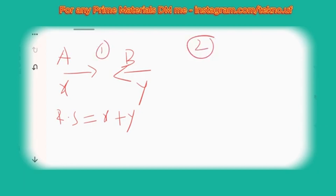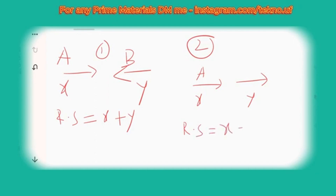Case 2: If A and B are running in the same direction — A at x km/h and B at y km/h — the relative speed will be |x minus y|, i.e., the absolute difference. Assume the person who is ahead has zero or static speed, and calculate the distance from there.